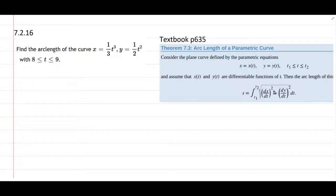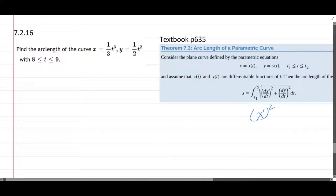You do need to get the x prime squared plus y prime squared, all of that in the square root, dt, from t1 to t2. So that's the arc length.